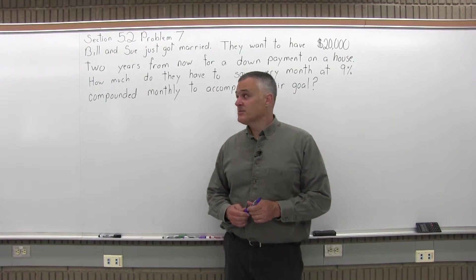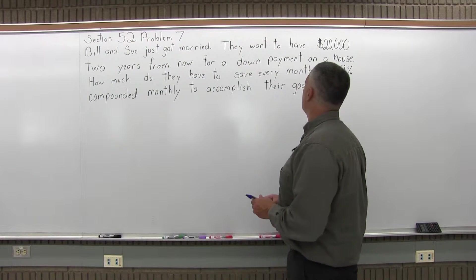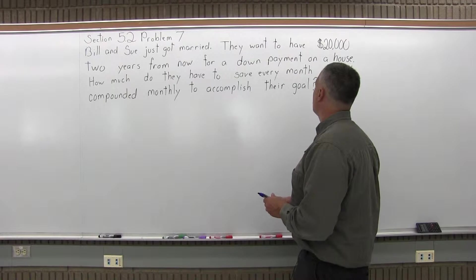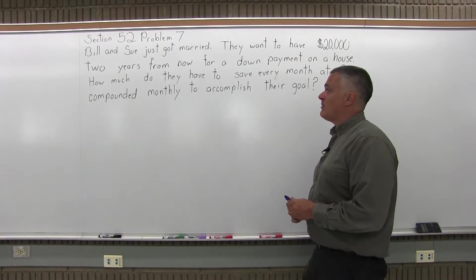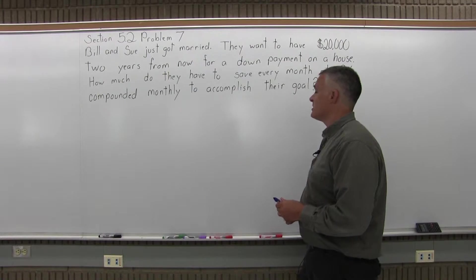This is Section 5.2, Problem 7. So it says Bill and Sue just got married. They want to have $20,000 two years from now for a down payment on a house. How much do they have to save every month at 9% compounded monthly to accomplish their goal?